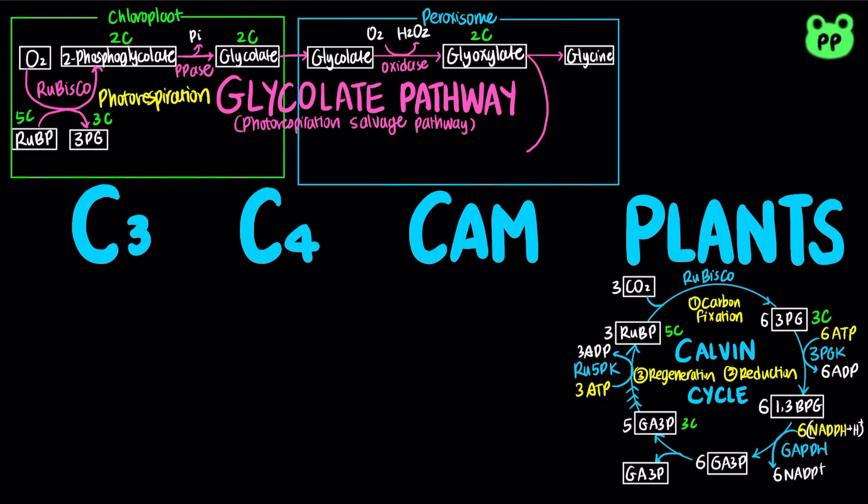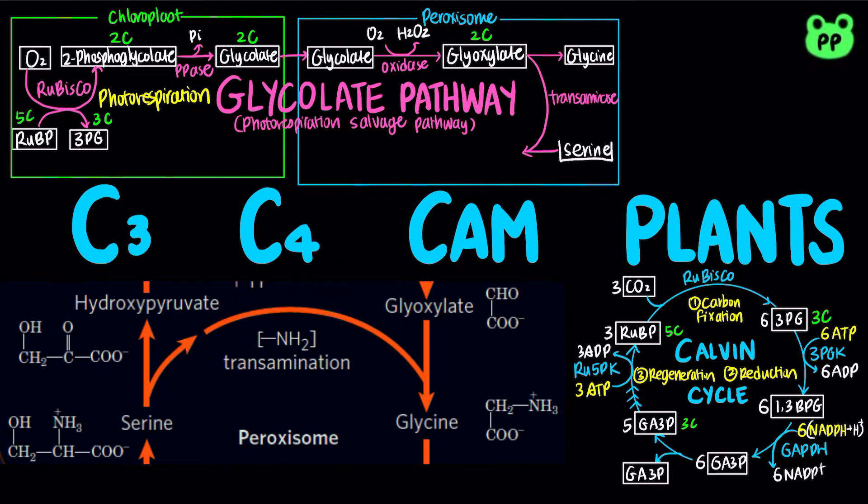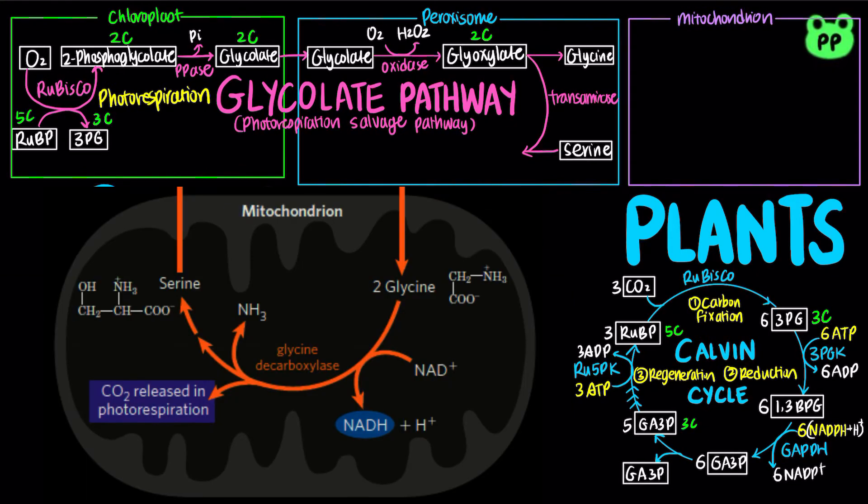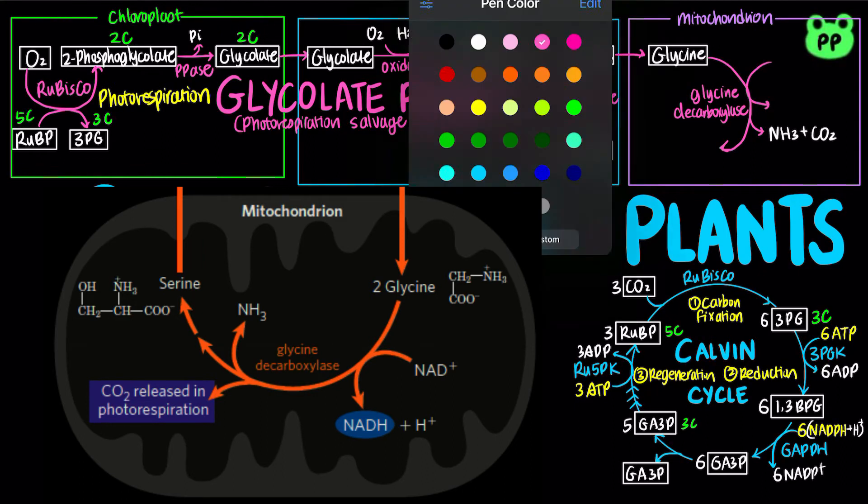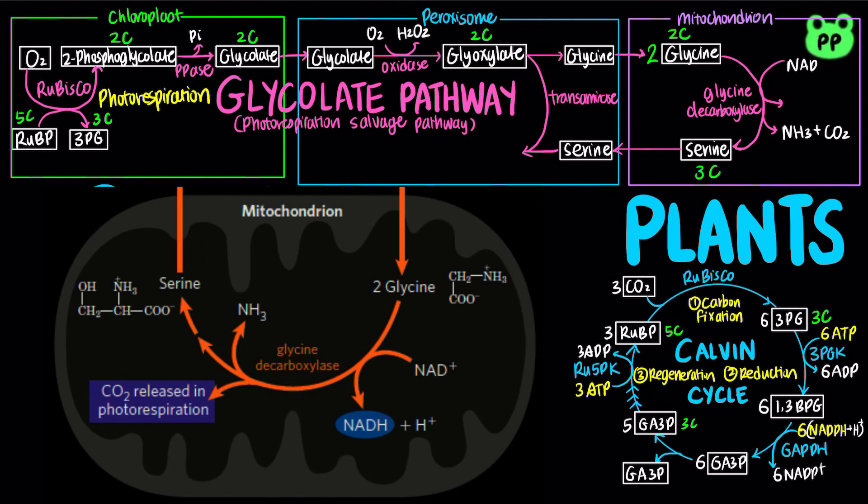Glyoxylate then undergoes transamination reaction with serine to produce glycine, which is exported to mitochondria, where a total of two glycine molecules undergoes oxidative decarboxylation to produce serine, ammonia, and free carbon dioxide, coupled to the reduction of NAD+ to NADH.